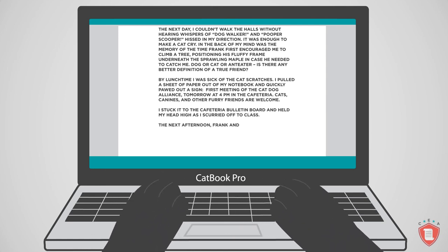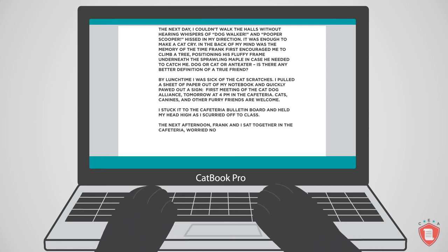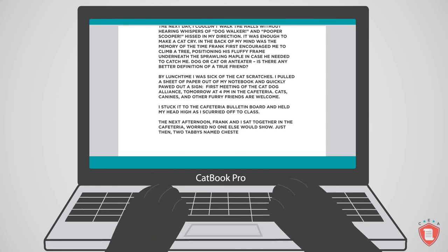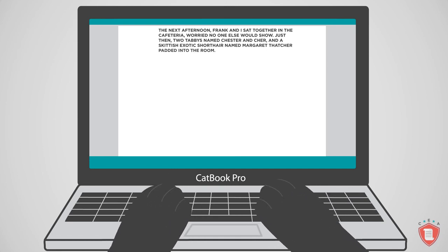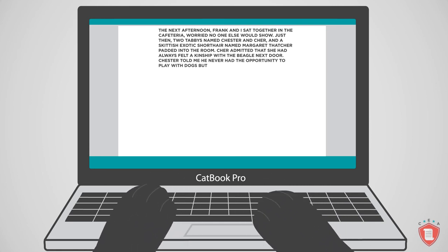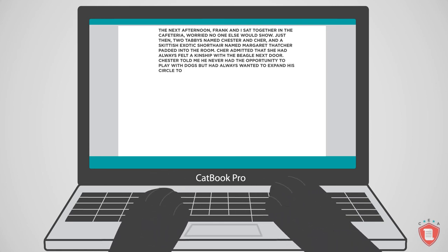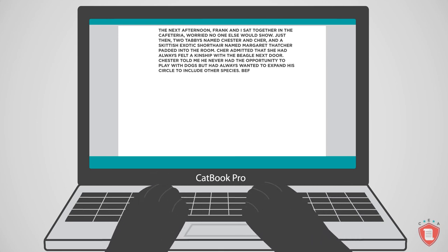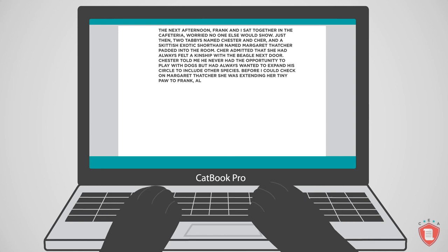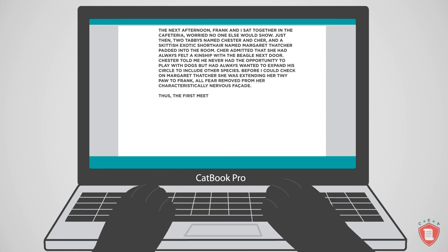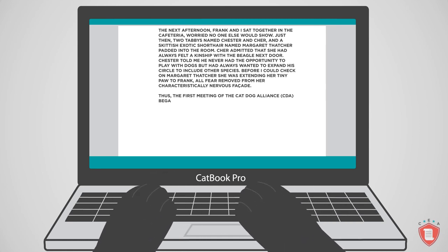The next afternoon, Frank and I sat together in the cafeteria, worried no one else would show. Just then, two tabbies named Chester and Cher and a skittish exotic shorthair named Margaret Thatcher padded into the room. Cher admitted that she had always felt a kinship with the beagle next door. Chester told me he never had the opportunity to play with dogs but had always wanted to expand his circle to include other species. Before I could check on Margaret Thatcher, she was extending her tiny paw to Frank, all fear removed from her characteristically nervous facade. Thus, the first meeting of the Cat-Dog Alliance, CDA, began.